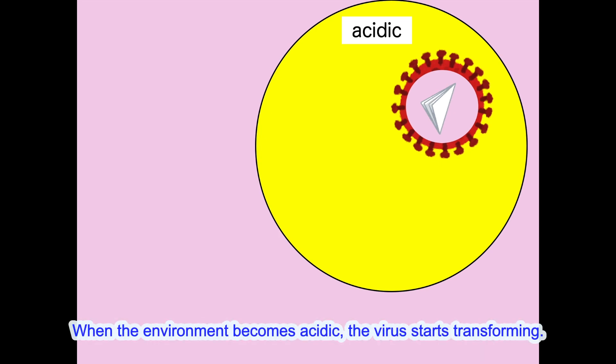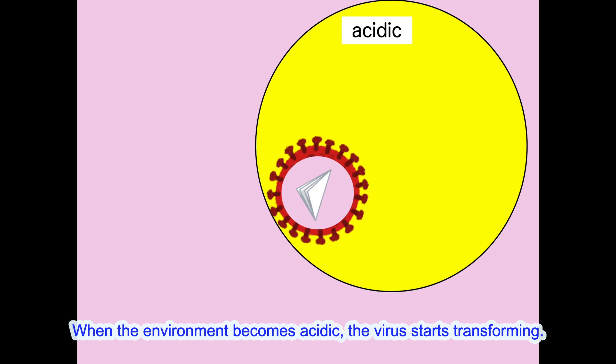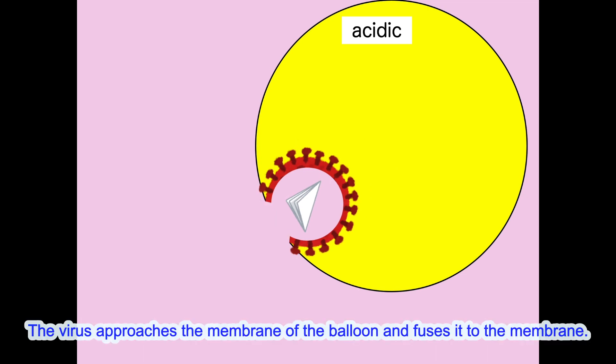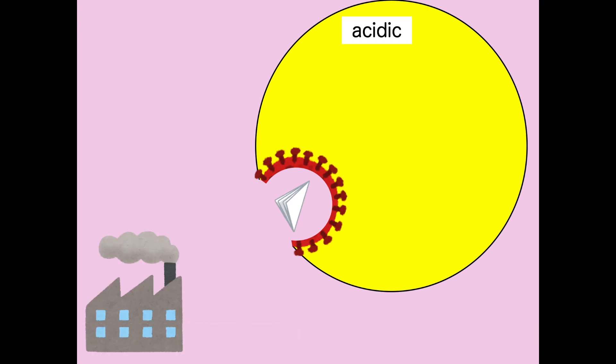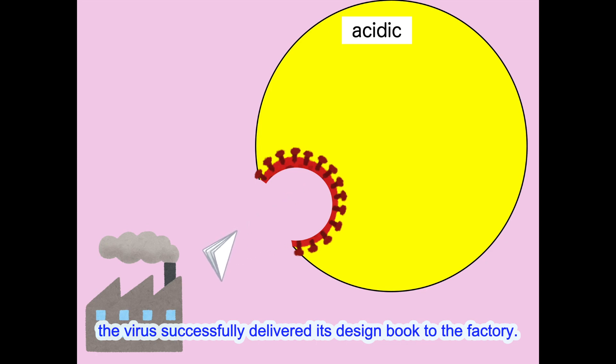When the environment becomes acidic, the virus starts transforming. The virus approaches the membranes of the balloon and fuses to the membrane. After opening itself wide to the outer environment, the virus successfully delivers its design book to the factory.